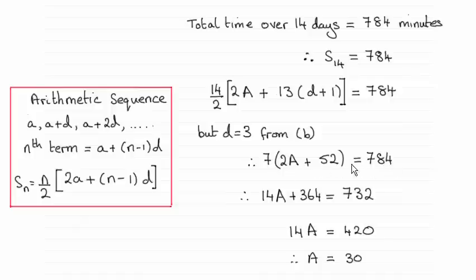So it's just a question of expanding the bracket from there on and just rearranging it to get a equals 30. Okay?